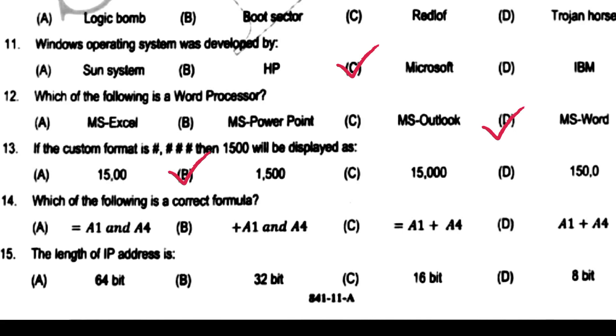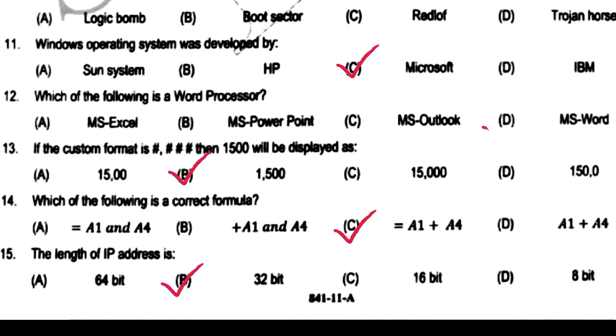Which of the following is a correct format? Write option A is the correct format. The length of an IP address is 32 bits.